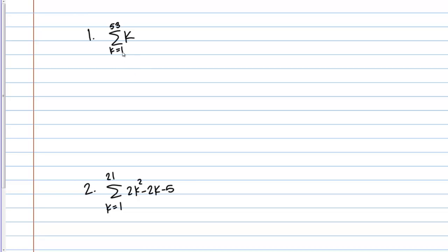You'll notice we have a subscript and a superscript. Then we have K, which in this case is what we're actually summing. If I were to do this by hand, I would be plugging in these values from 1 to 53 for K and summing them up. This would be like 1 plus 2 plus 3, and so on, all the way up to 53.